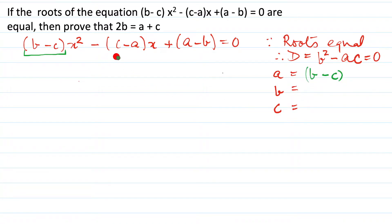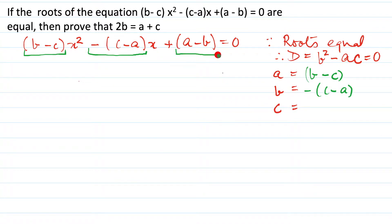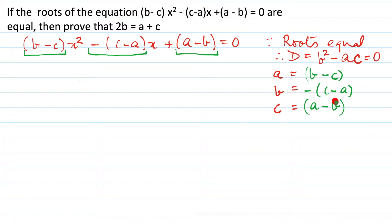Our b is the coefficient of x, so it is minus into bracket (c minus a). And our c is the constant term — the term without x. In our quadratic equation we have the x squared term, then the x term, and then the constant term without x, so that gives us (a minus b). Now that we have the values of a, b, and c, let us evaluate the discriminant b squared minus 4ac.